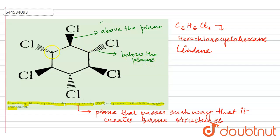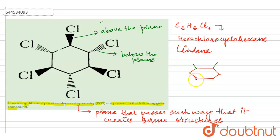Three chlorines are present above the plane and three chlorines are present below the plane. This is the cyclohexane ring. The chlorines present above are shown in alternate positions — something like this — these are the chlorines above the plane.